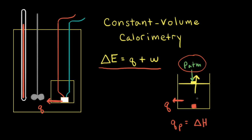So for this example with the container with the movable piston, when we did our combustion reaction, the heat that's transferred at constant pressure is equal to the change in enthalpy delta H. And as the gases expand and push on the piston, work is done.